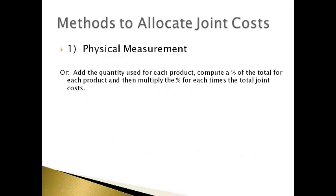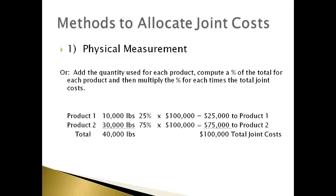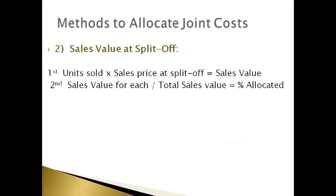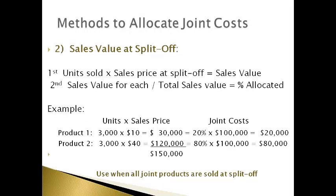Another way to do the math is to allocate using physical measurement and the percentage of the total. Joint costs are $100,000 and the two products are allocated the joint cost based on the percentage of total pounds used to make each product. The second method is called sales value at split-off. The total sales at split-off is used to allocate the joint cost between products. A percent of the total sales dollars is multiplied by the joint cost to get the amount that is allocated to each product.